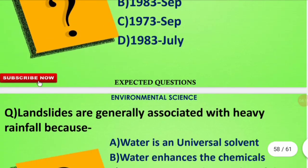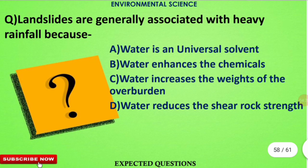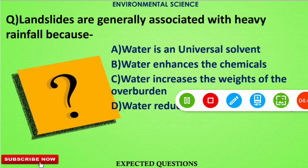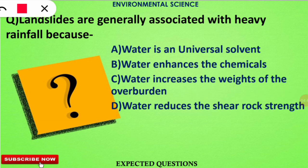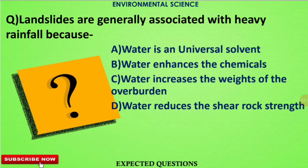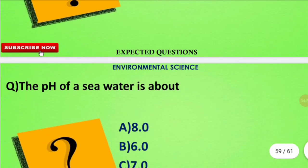The next question is: landslides are generally associated with heavy rainfall because — the correct option is option C. The water from the rain increases the weight of the overburden, and as a result, rainfall causes heavy landslides.